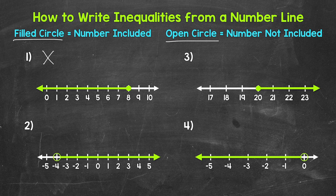Looking at the number line again, we have a filled circle at 8, so that shows us that 8 is included — it is a solution. And then we have an arrow pointing left, the direction of all of the numbers less than 8. So x is going to be less than or equal to 8. And that's our inequality.